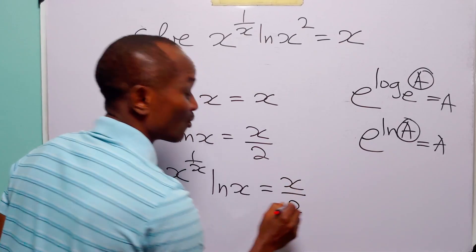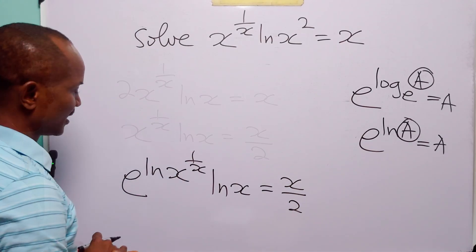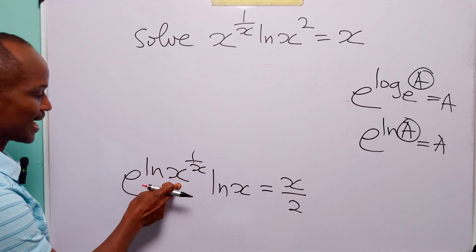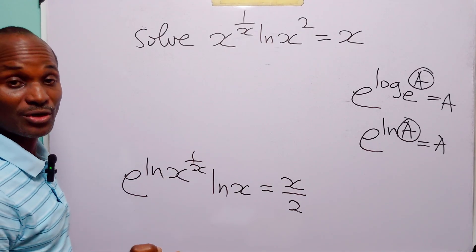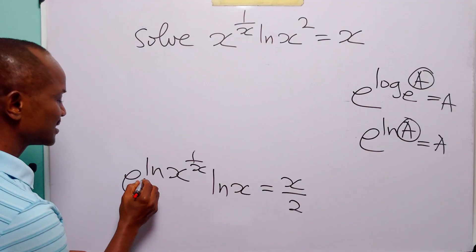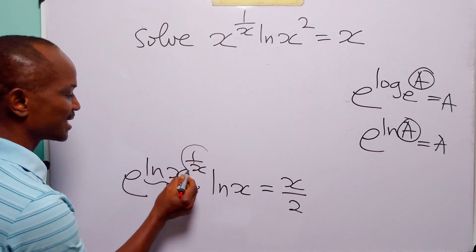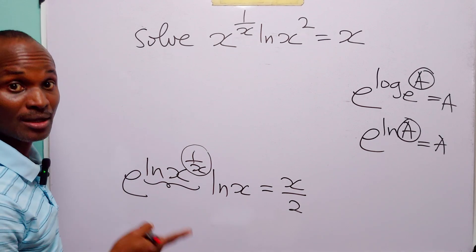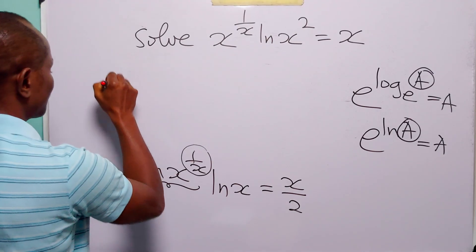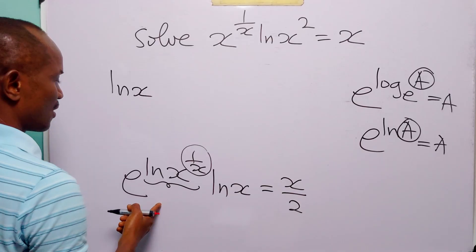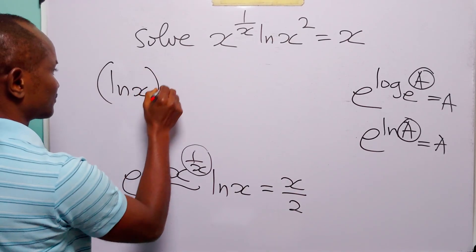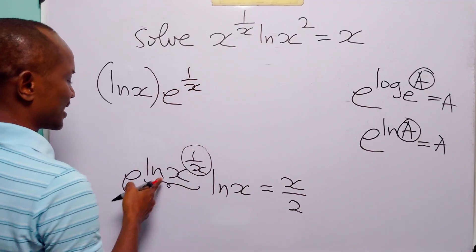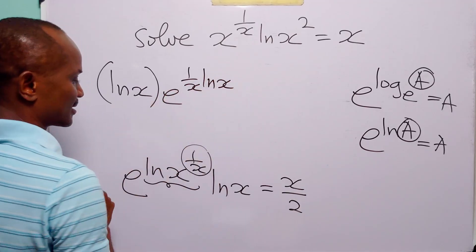This is still equal to x over 2. Notice that in the exponent of e we have the log term ln x to the power 1 over x. We apply the power rule again, bringing down the exponent 1 over x to become a multiplier. That gives us ln x multiplied by e to the power 1 over x times ln x.